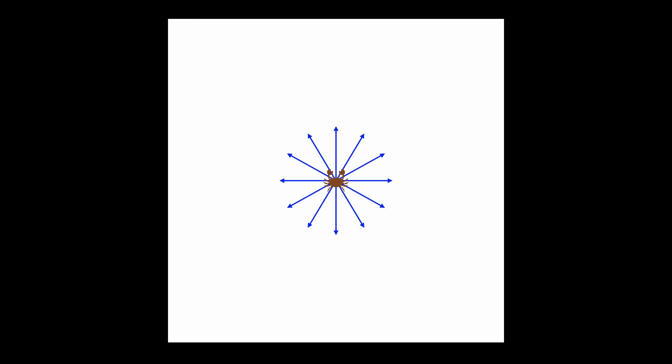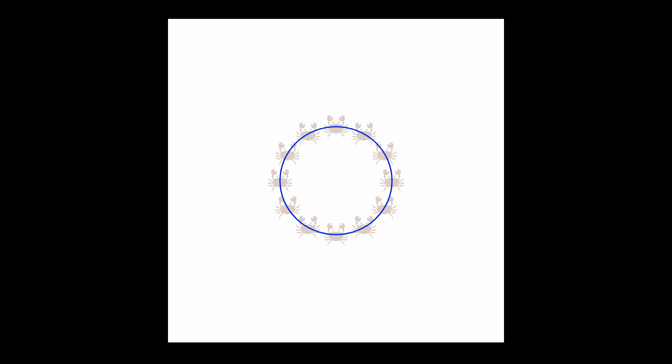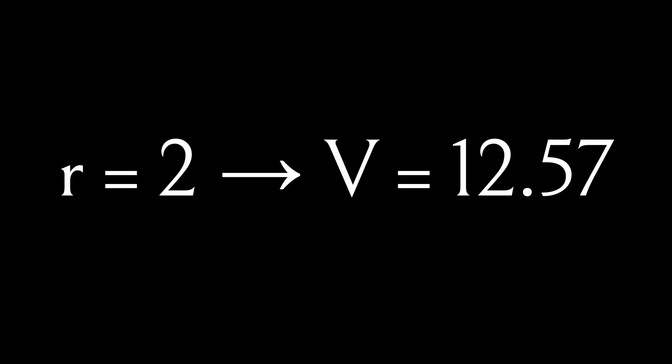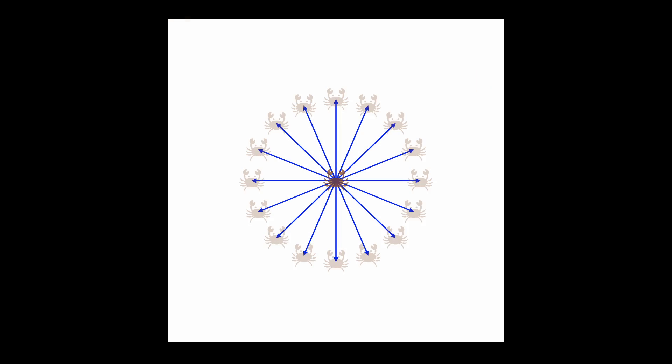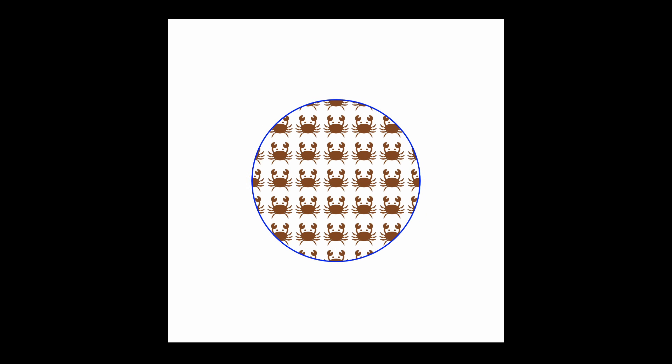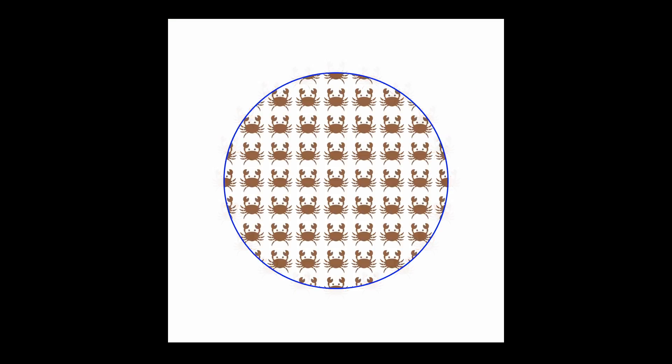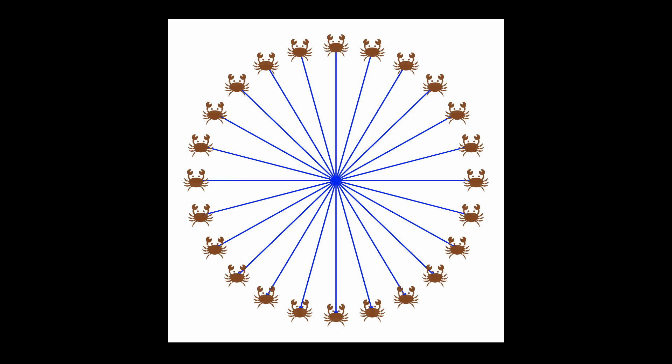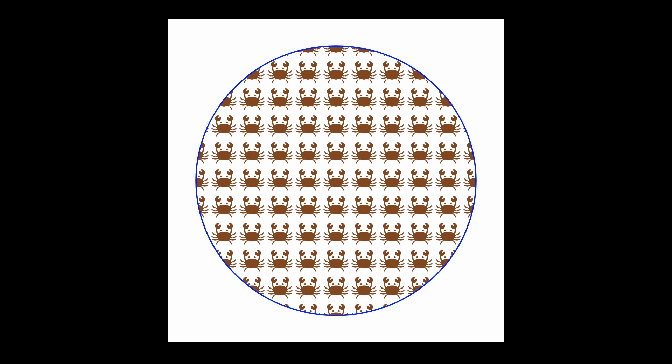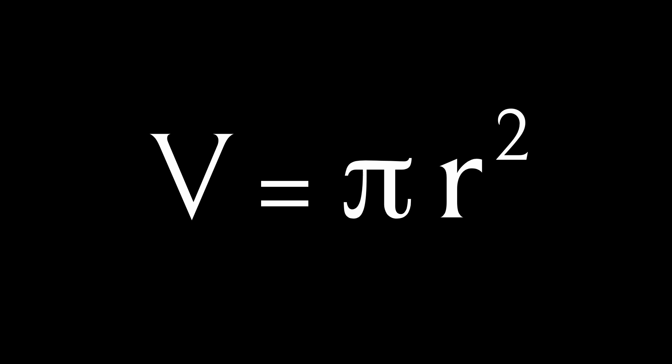When the crab moved two crab lengths in every possible direction, it covered 12.57 crabs worth of space. When it moved three crab lengths, it covered 28.27; four crab lengths, 50.27; and five crab lengths, 78.54 crabs worth of space. For the mathematically minded crab, the formula that fits this progression is: whenever the crab moves r crab lengths in every possible direction, it covers π r² crabs worth of space.